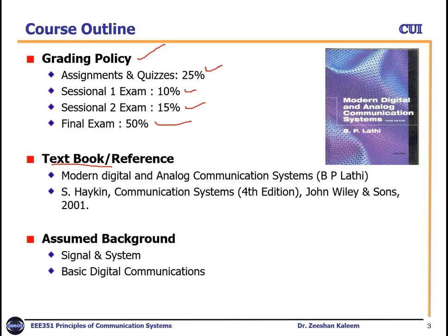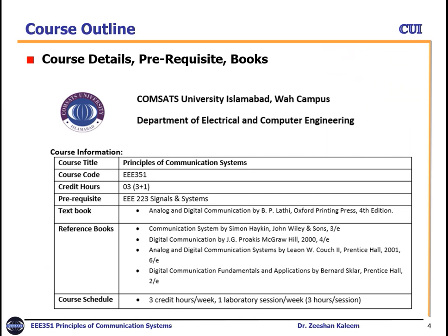The main textbook for this course is Modern Digital and Analog Communication Systems by B.P. Lathi. The other reference book is Communication Systems by Simon Haykin. We assume you have a background in signals and systems and basic digital communication systems. The course code is EEE351 and the prerequisite is Signals and Systems.